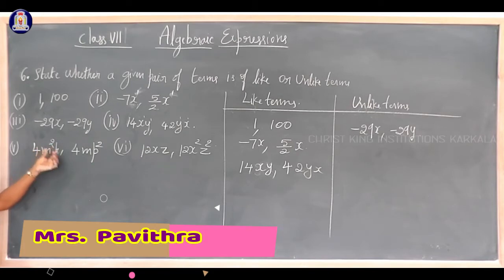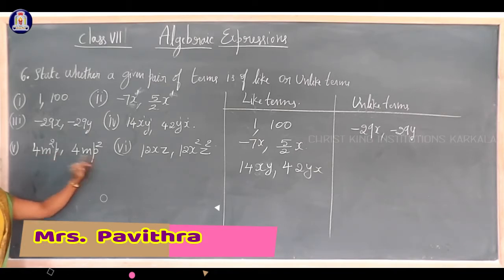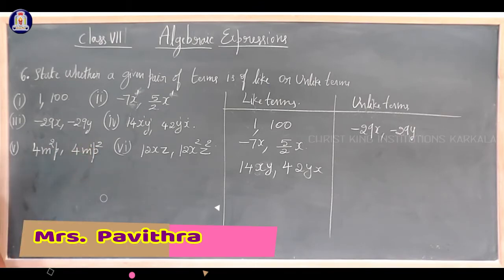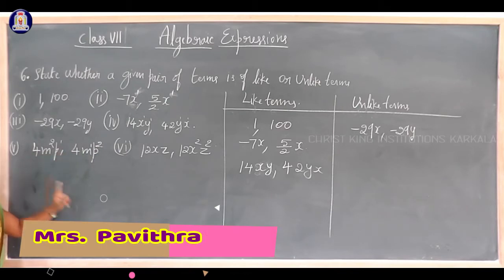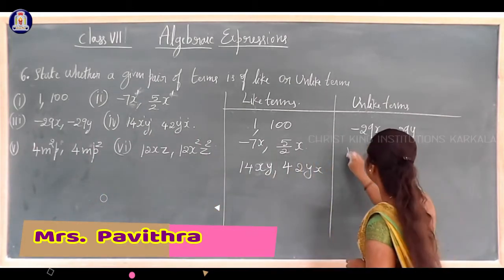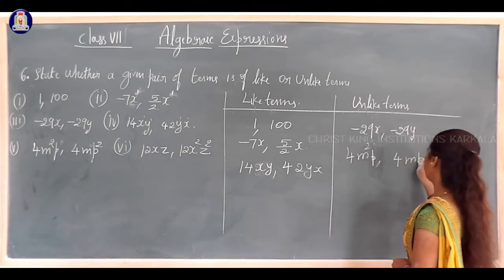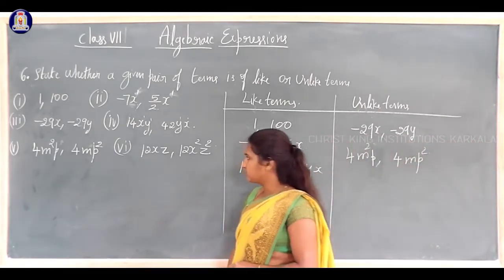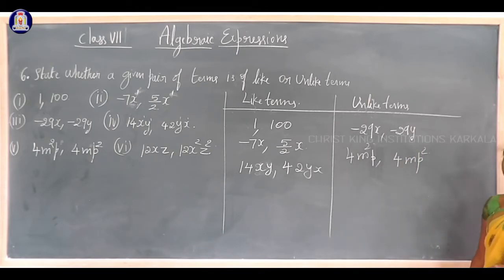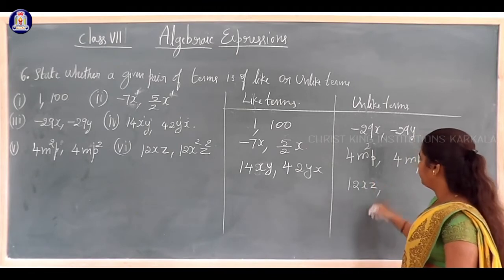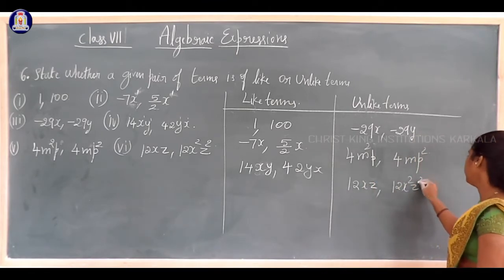Fifth: 4m squared p and 4mp squared. The variables m and p are the same, but the exponent of m is 2 in the first and 1 in the second, and the exponent of p is 1 in the first and 2 in the second — so these are unlike terms. Sixth: 12xz and 12x squared z squared are unlike terms because same variables but different exponents.